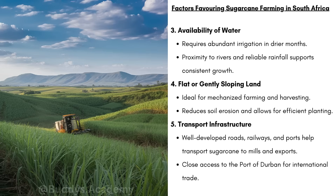Thirdly, you need the availability of water. Sugarcane requires abundant irrigation in the dry months because it's a water-intensive crop — it needs a lot of water to grow. Farmers must supply extra water during dry months to prevent the sugarcane from drying out. Proximity to rivers and reliable rainfall supports consistent growth. You also need flat or gently sloping land, which is ideal for mechanized farming and harvesting. Machines work best on flat land, and it reduces soil erosion during heavy rainfall periods.